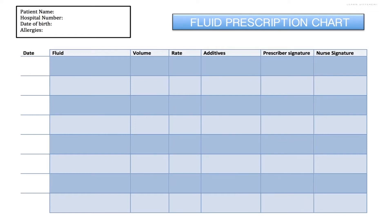I just showed you how to solve the vancomycin station. This is what the fluid prescription chart is going to look like. You can either fill in the vancomycin information in the antibiotic section or in the fluid prescription chart — both are fine. On the top left side you are going to fill in the patient name, hospital number, date of birth, allergies, and everything. Then fill in the date on which you are prescribing that particular fluid.